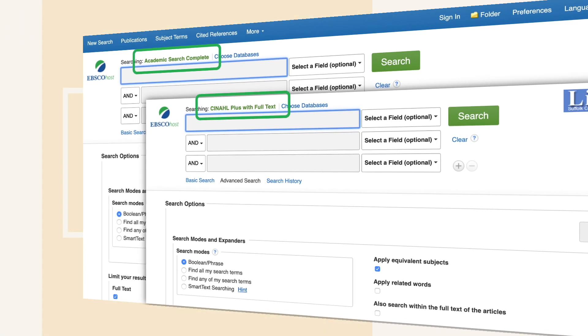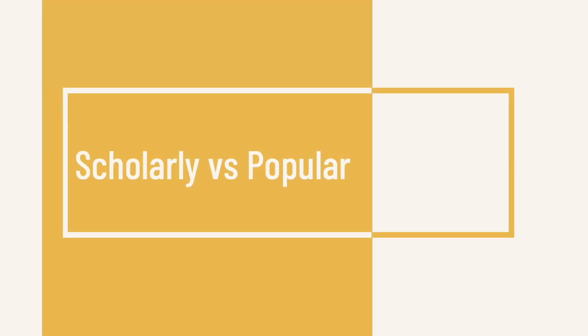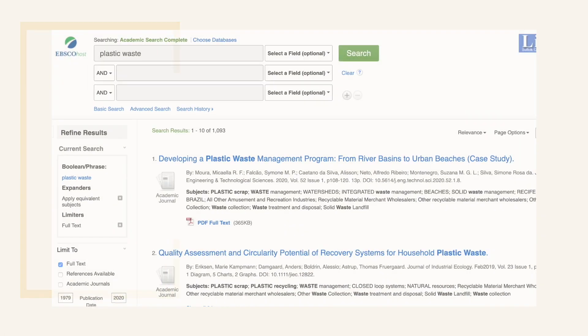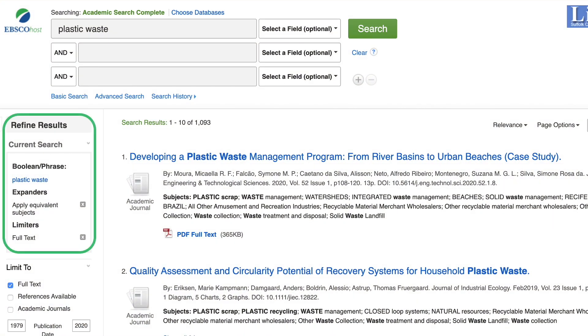As articles are retrieved, you may find the need to limit them by magazines or scholarly journals, which are also known as academic or peer-reviewed. Most of us are familiar with popular magazines, as they are often colorful and written with accessible language to appeal to everyone. In comparison, scholarly journals are written and approved by scholars in one field — language is often technical, and graphics take the form of tables and charts to convey data results. Professors often prefer the latter.